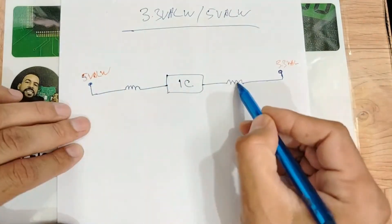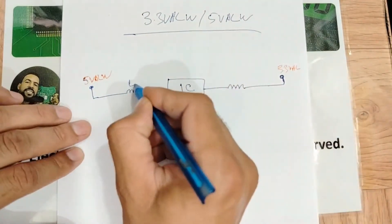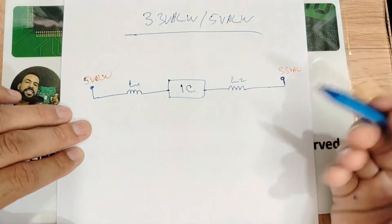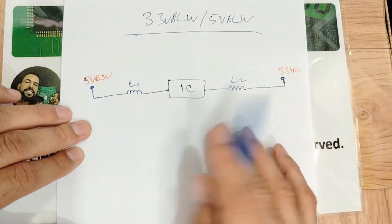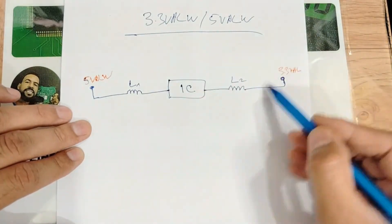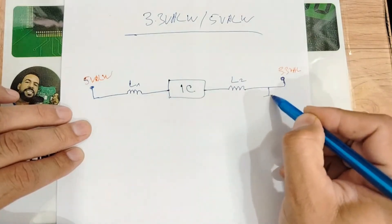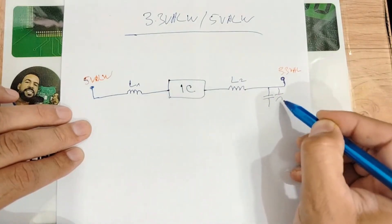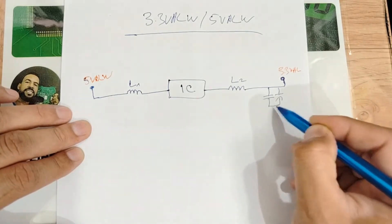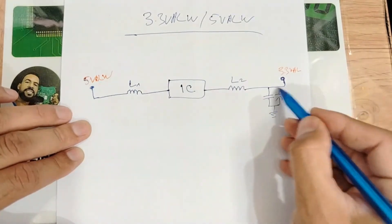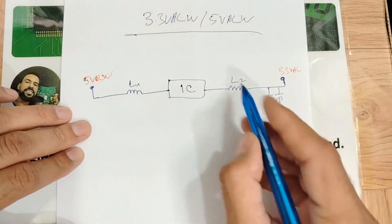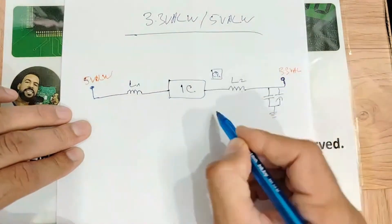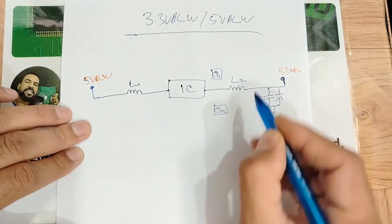We have inductors here — L1, L2. Let's deal first with the output. In the output, we can find a ceramic capacitor and an electrolytic capacitor connected to the ground. This is for filtering. We have an inductor, and here we have two MOSFETs: Q1 and Q2.